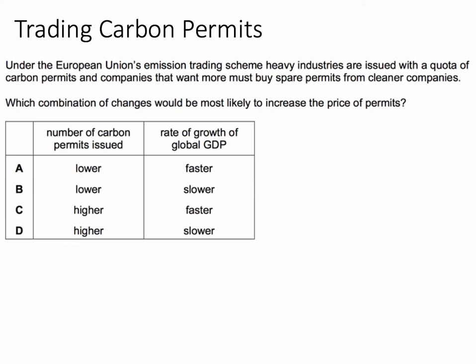So we're looking here at the market for permits. This is a really interesting bit of economics — the idea of trading permits, trading carbon — so they're reducing carbon tax and creating a market in the right to pollute. One of the aspects of the question is the idea of a quota. A quota is of course a quantity limit on permits, so businesses that are polluting per tonne of carbon will have to have sufficient permits to cover that emission of carbon. So what combination of changes would be most likely to increase the price of permits? Which answer did you choose?